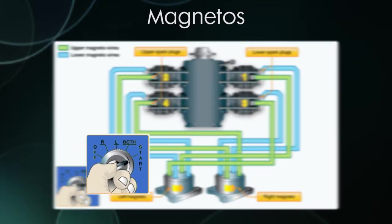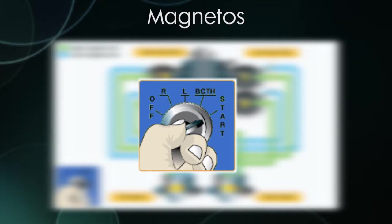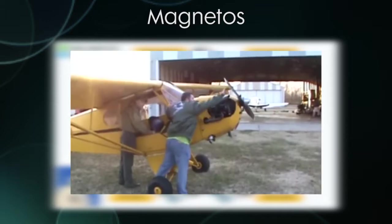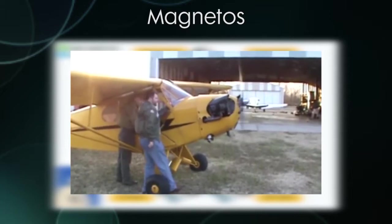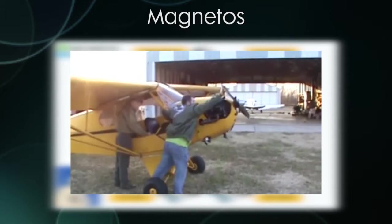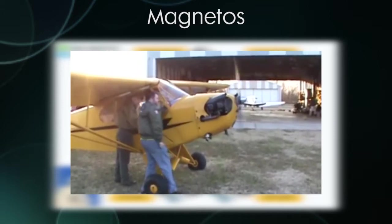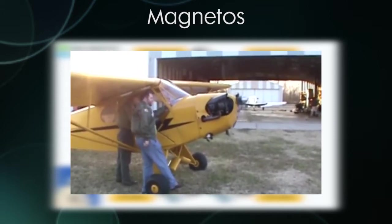The ignition switch in the cockpit is a little different than the one in your car — it has five positions: off, left, right, both, and start. You can select either magneto or both, and you'll cycle through these during your pre-takeoff check to make sure each magneto is working properly. The danger in forgetting the key in the ignition is huge: if the magnetos are left on and someone spins the prop, the engine can start if there's any fuel left in the cylinders. The magnetos don't need any electrical current — as long as the propeller is spinning, they will produce a spark, and can start the engine even if electrical power is off. So be careful — make sure you take the key out after the plane is shut down.